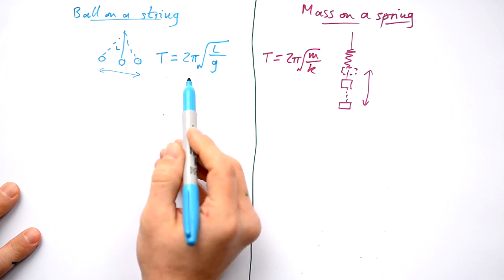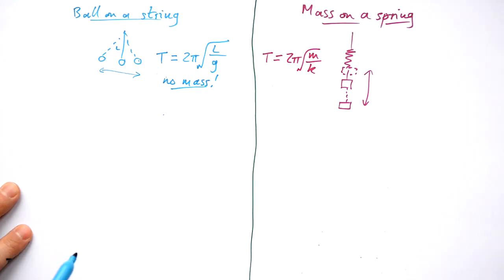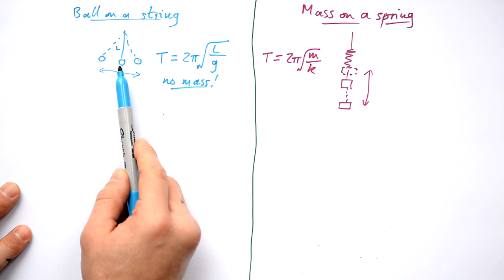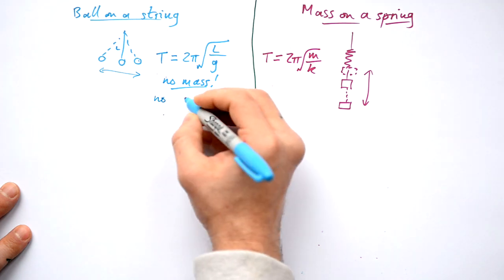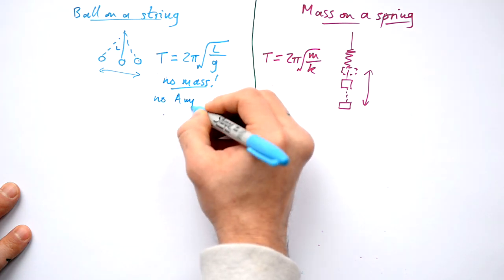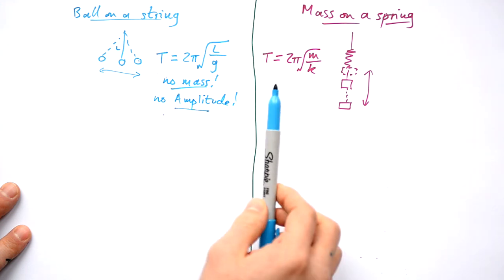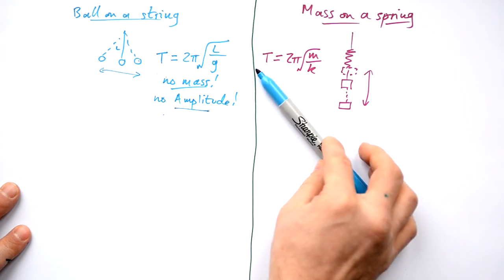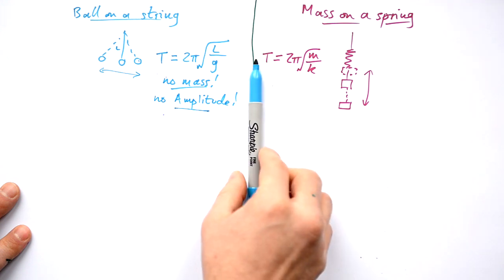Notice what this equation doesn't have in it: mass. That's weird, isn't it? It doesn't matter what mass the thing on the end has. The surface area does kind of matter in reality, but more on that later. But this could be a golf ball or it could be a car, and it doesn't matter, it would still have the same time period. Notice that it doesn't have an amplitude either. So again, it doesn't matter whether you displace the pendulum that much to begin with or that much to begin with. It's going to have the same time period regardless.